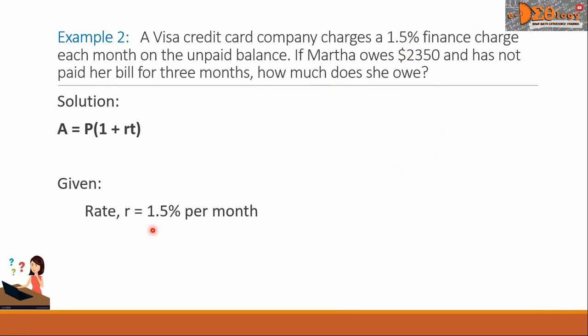Let us convert this 1.5% into decimal. So, we will put 1.5 over 100. We will get the quotient here. So, the answer is 0.015. So, 1.5% equals 0.015 in decimal. And this is the rate per month.